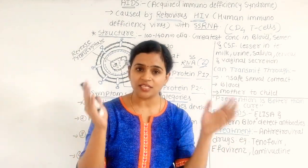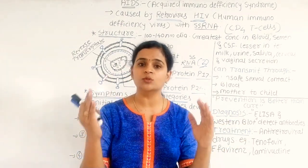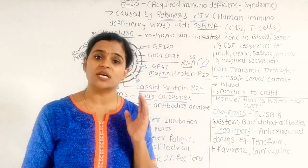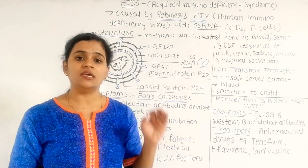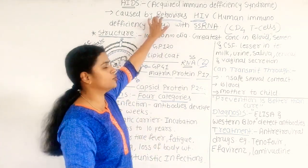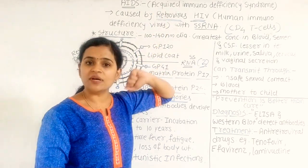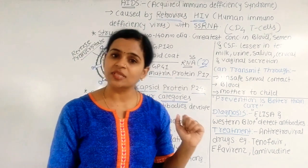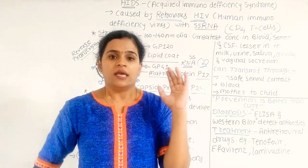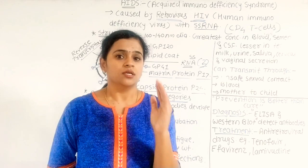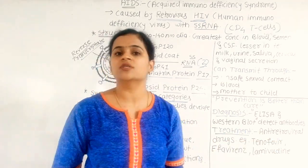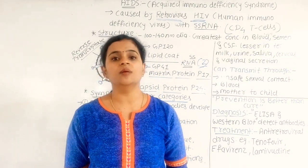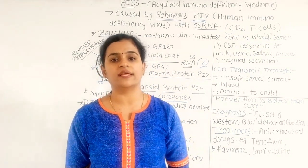What is it in HIV that we are not able to cure it? HIV is a kind of retrovirus. What type of virus is HIV? Retrovirus. When this virus is outside — in the atmosphere — its genetic material is RNA.